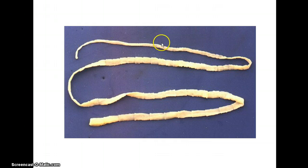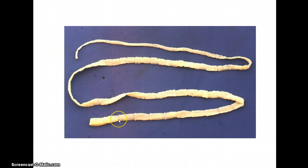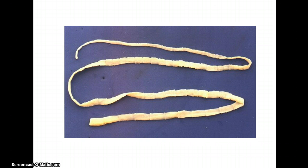You can see that these proglottids are getting bigger and bigger along the length of this worm, so each proglottid is maturing over time and the reproductive organs are maturing. Towards the end of the worm, the eggs within the uterus have become fertilized. Basically each little proglottid is like a bag of fertilized eggs that is going to break off, end up in the feces, and end up in the external environment. Each proglottid can produce like 50,000 eggs, and each worm can have like 2,000 to 4,000 proglottids — so that's enormous.